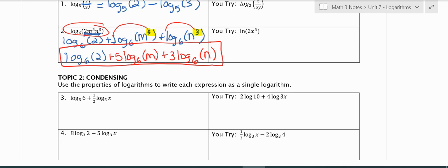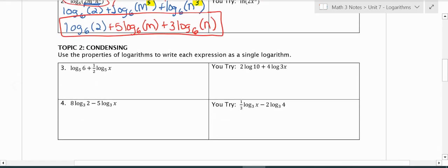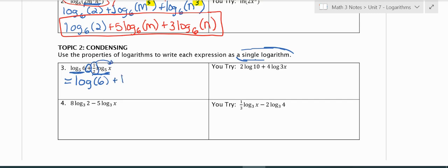Another skill we have is we could condense or rewrite as a single log. When we rewrite this one out, we're using the same base, because if we didn't we wouldn't be able to do it or we'd have to do some rewriting. We're using addition, so it's the same as multiplication. The first one doesn't have a coefficient, but the second one does. So before I can put them together, I'm going to move this 1/2 and write it as an exponent because we don't want any coefficients.